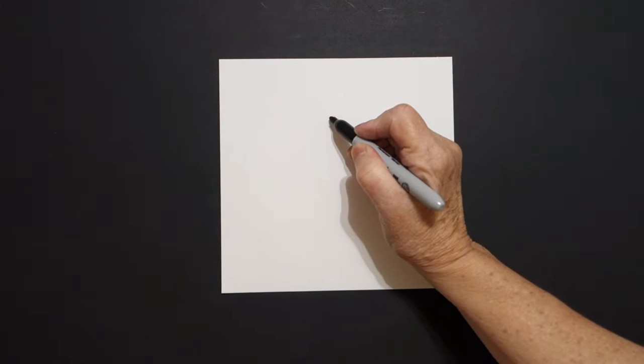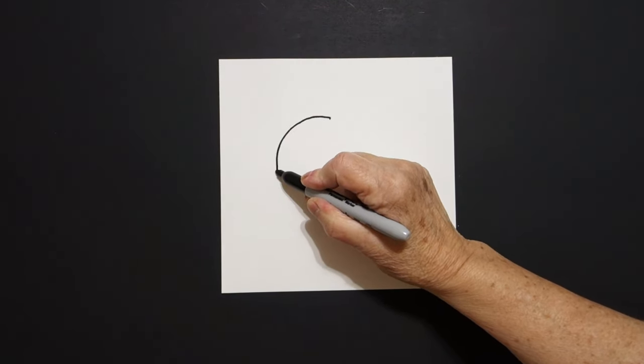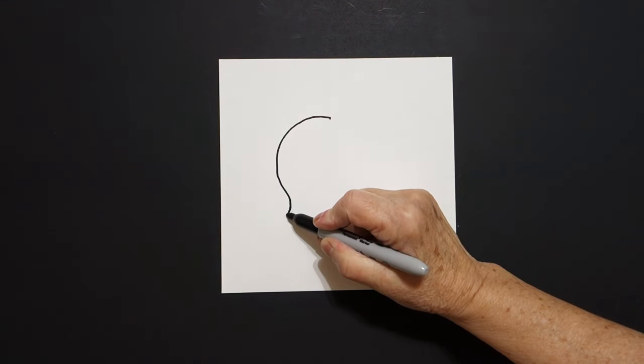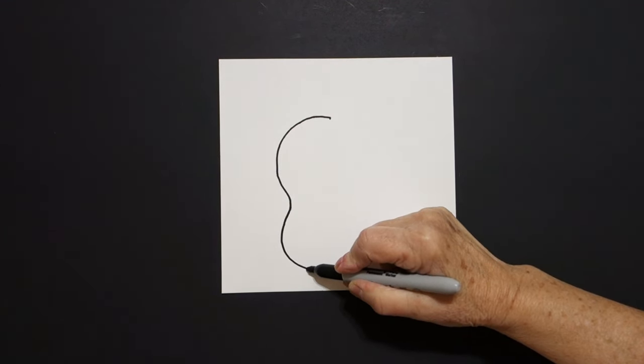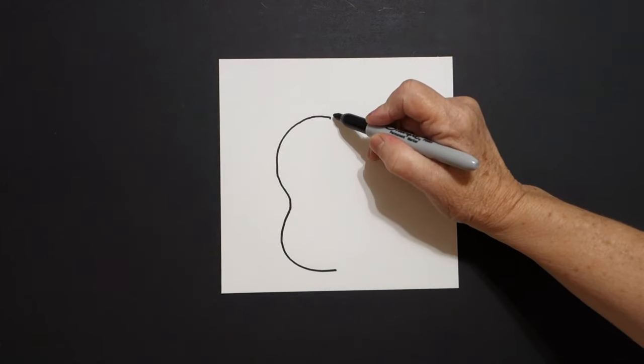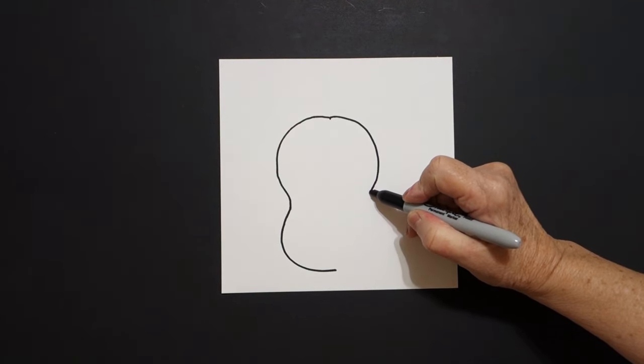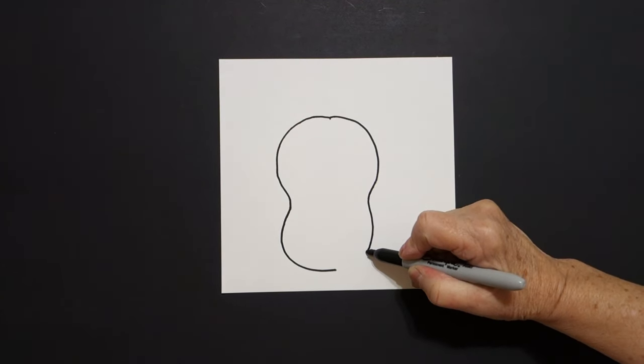From that dot, going towards the left, I draw a curve line down, curve line in, curve line out, and leave it floating. Come back to the dot, curve line down, curve line in, curve line down.